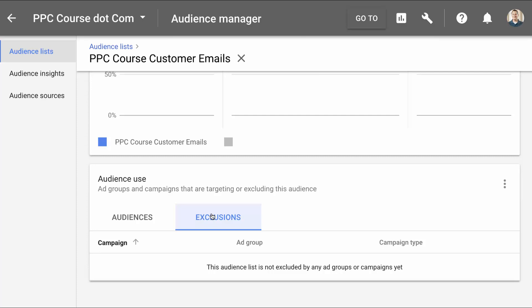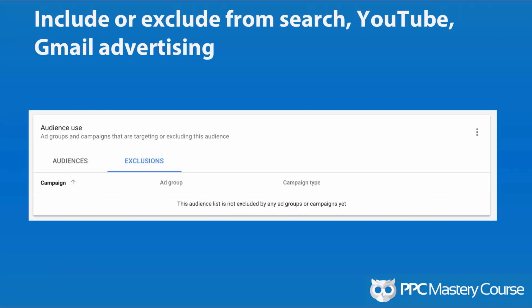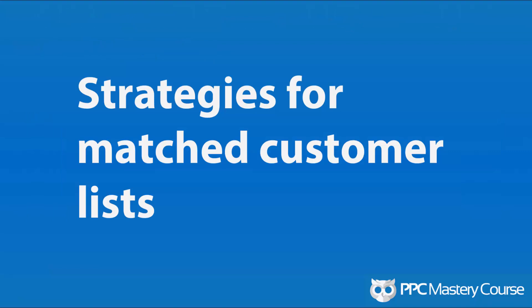Once you know about this, it makes a lot of sense to add these exclusions or inclusions to your campaigns. I wanted to leave you with the question of what you can do once you have these lists. You can include or exclude these audiences from your search, YouTube, and Gmail advertising campaigns. On the hamburger menu on the right-hand side, you can add it to any single campaign you want.